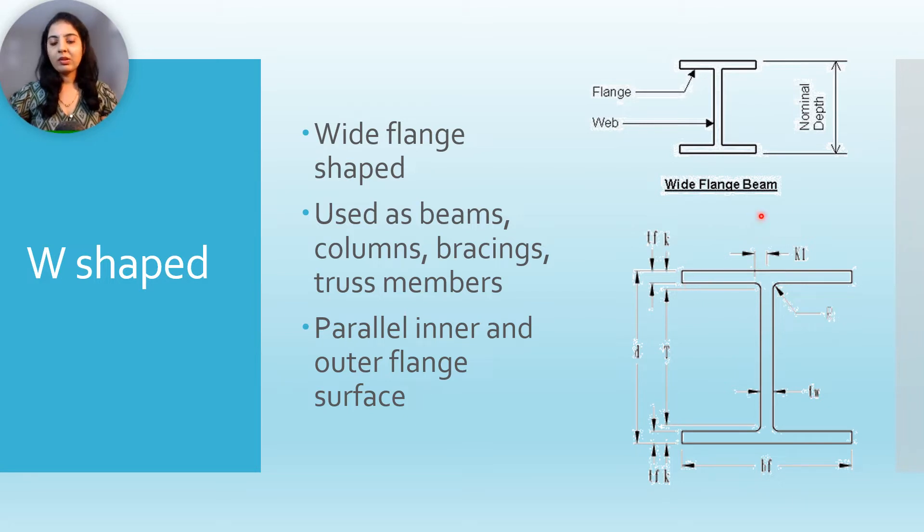So this is from construction manual. This is the radius R, then thickness of the flange is denoted by tf, total depth d and thickness of the web. The width of the web is tw, height of the web is h, then width of the flange as bf, and this is k1, this is k.